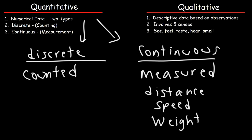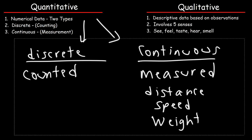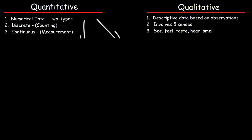Now let's move on to qualitative data. Qualitative data is basically descriptive data based on observations. And you use words to describe this data, not numbers.